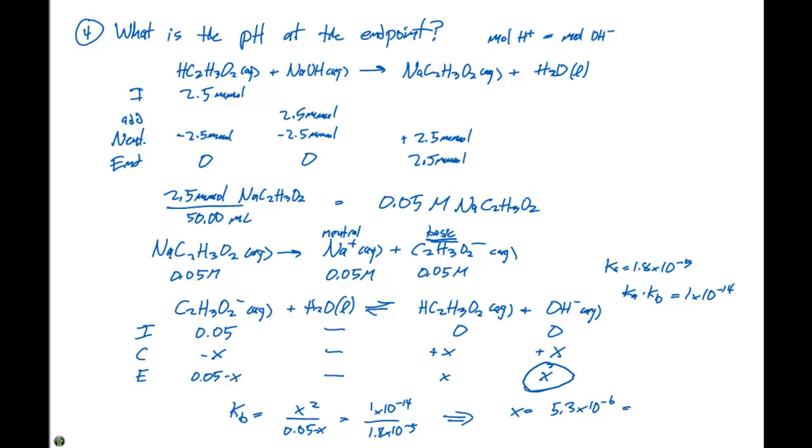Which if we look up here, our x is going to be the concentration of OH- ions at equilibrium. So our pOH is going to equal 5.28, and the pH is going to equal 14 minus that, which is equal to 8.72.